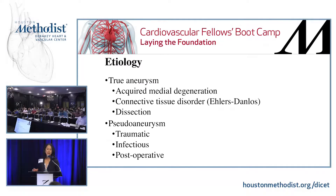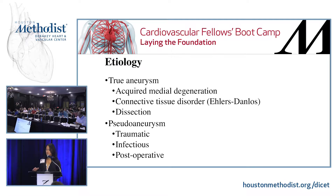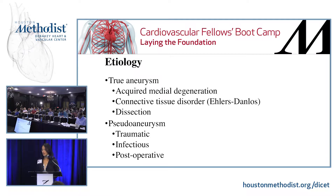The etiology of visceral artery aneurysm remains not very well defined, but typically we classify them into true aneurysm versus pseudoaneurysm. True aneurysms are typically acquired, thought to be due to underlying medial degeneration. People with connective tissue disorder are more predisposed to developing visceral artery aneurysm, and people who present with spontaneous dissection can develop true aneurysms at a later time. Pseudoaneurysms are probably more common — these are due to either traumatic causes, whether blunt or penetrating, infectious causes, or postoperative pseudoaneurysm.